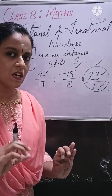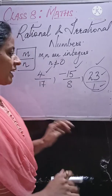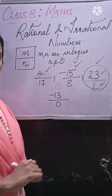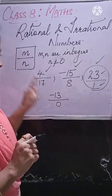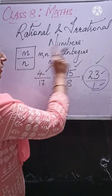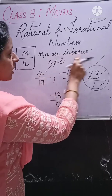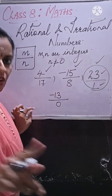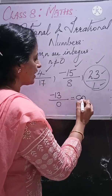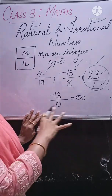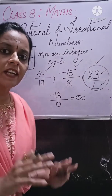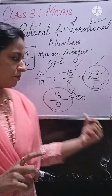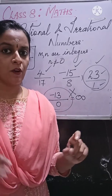Now which number is not a rational number? If I write minus 13 upon 0 — we specified that N, the denominator, should not be 0. The numerator and denominator are both integers, but the denominator should not be 0. Here the denominator is 0, so this number is not defined. There is no proper definition for such numbers, so this is not a rational number because the denominator is 0.